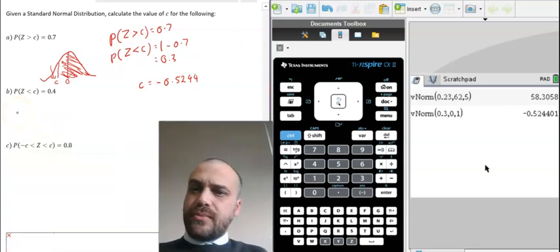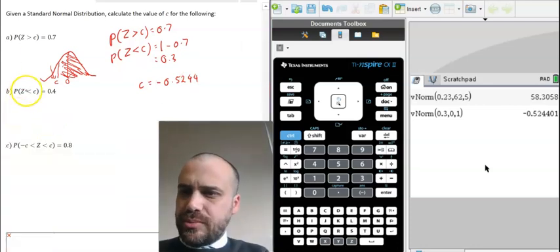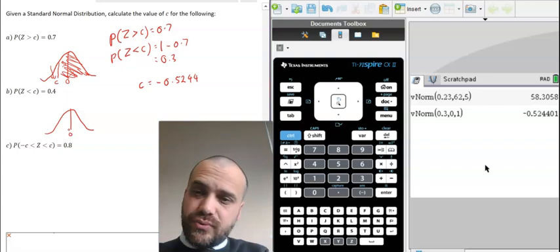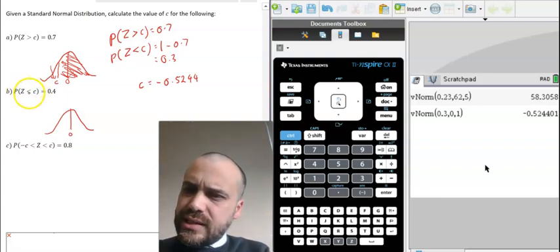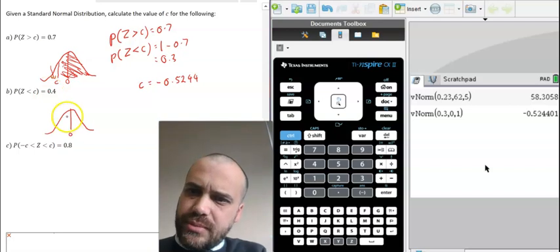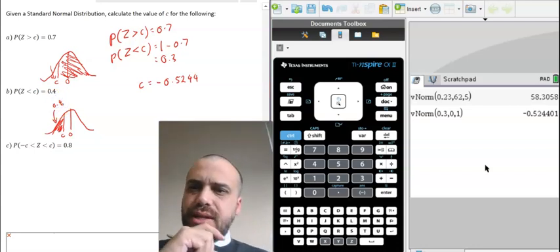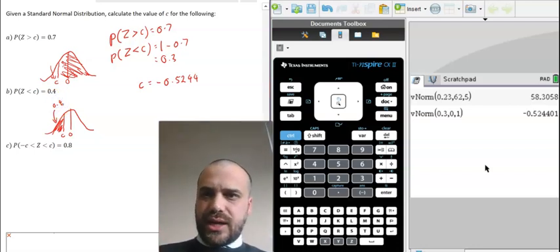Now this next question here, much more straightforward. The probability that Z is less than C is 0.4. So again, mean of 0, standard deviation of 1. Z is less than C is 0.4. So that means that C must be right there and that area must be 0.4. Now this time our calculator can handle that perfectly.